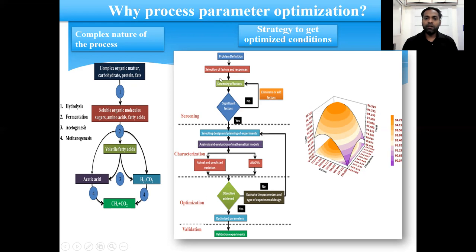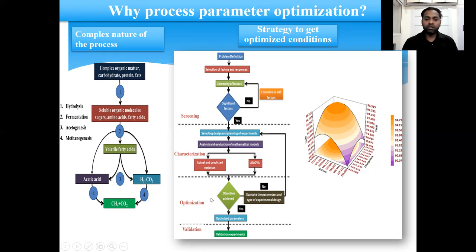In the screening step, we have to define the problem, select the factors and responses, and screen the factors. If we do not get significant factors, we have to add or eliminate factors and again screen. If we get significant factors, we go for the design at the next level of experimentation. Then we analyze the design, find out the variation between actual and predicted values, and perform ANOVA to find out the significant variables. If the objective is not achieved, we re-evaluate the parameters and type of experiment design. If the objective is achieved, we get optimized conditions and validate the experiment to maximize production.